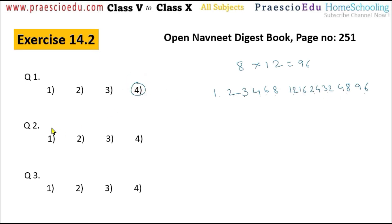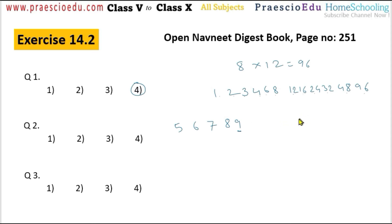Question number 2: which is the greatest five-digit number formed by using the digits 5, 6, 7, 8, and 9 only once, and divisible by 8? The condition is it should be divisible by 8, meaning the number must be even.